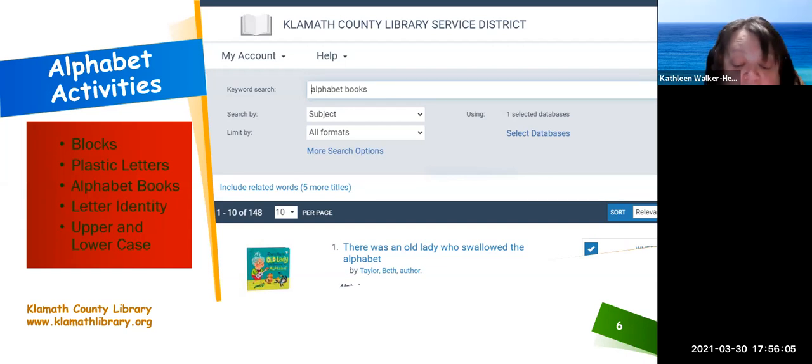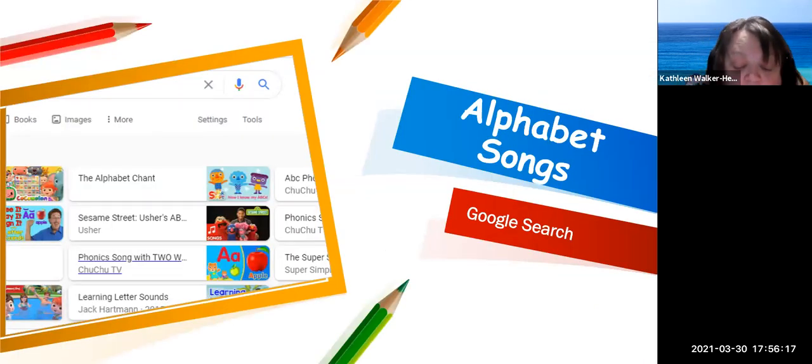A catalog search of alphabet books in the county library came up with 148 books to choose from and check out. Google alphabet songs to reach this collection of alphabet songs that can be accessed by clicking on them.